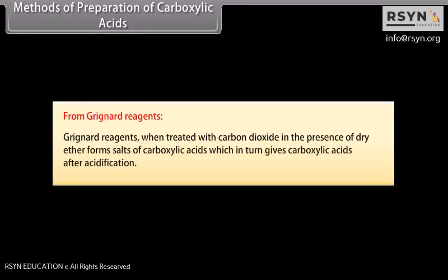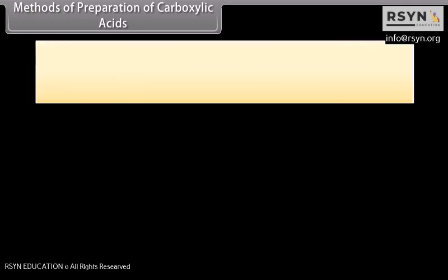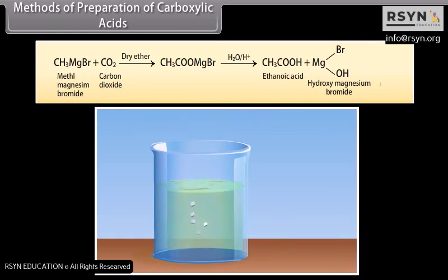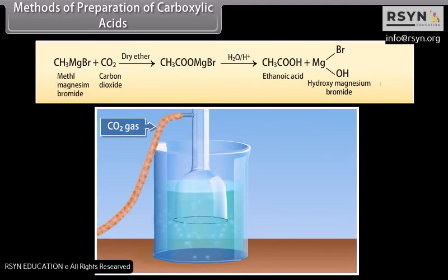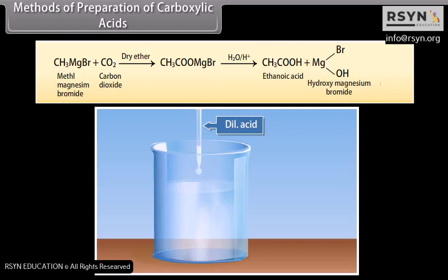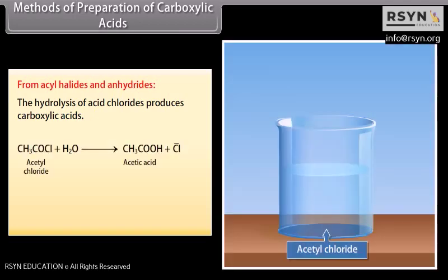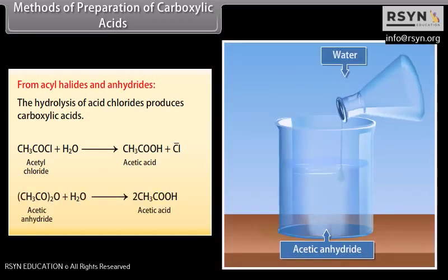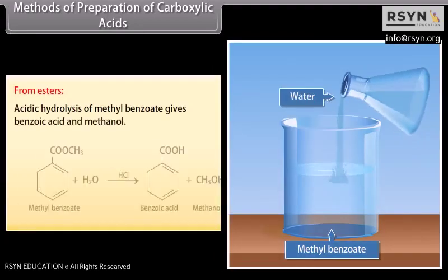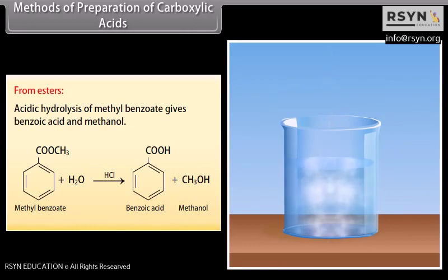From Grignard reagents: Grignard reagents, when treated with carbon dioxide in the presence of dry ether, form salts of carboxylic acids, which give carboxylic acids after acidification. Methyl magnesium bromide reacts with carbon dioxide in dry ether to form the salt, which gives ethanoic acid and hydroxy magnesium bromide after acidification. From acyl halides and anhydrides: hydrolysis of acid chlorides produces carboxylic acids; hydrolysis of acetyl chloride produces acetic acid. From esters: acidic hydrolysis of methyl benzoate gives benzoic acid and methanol.